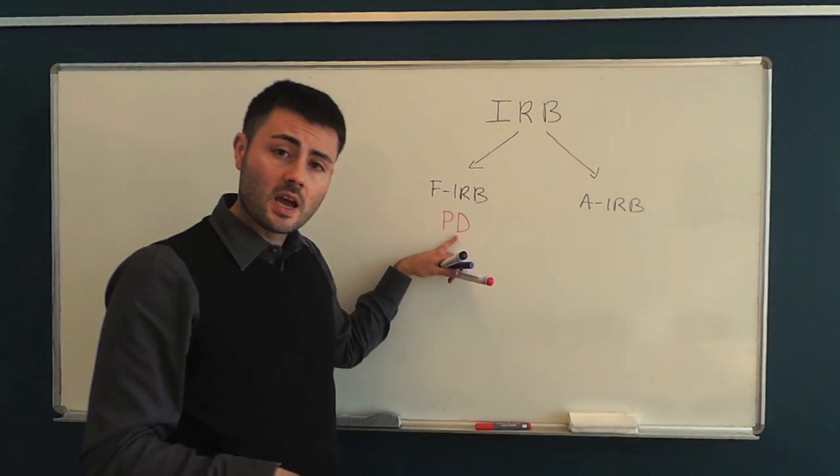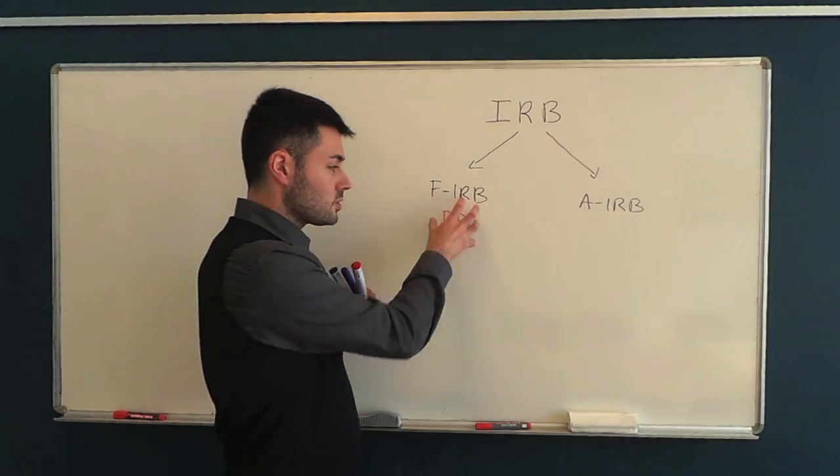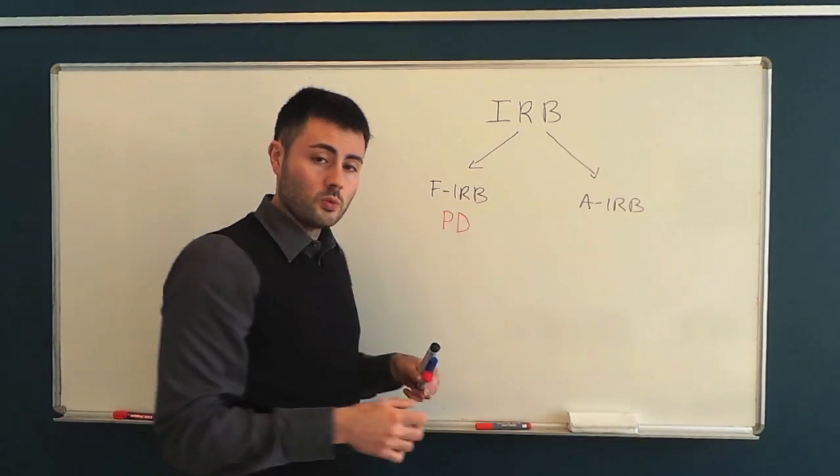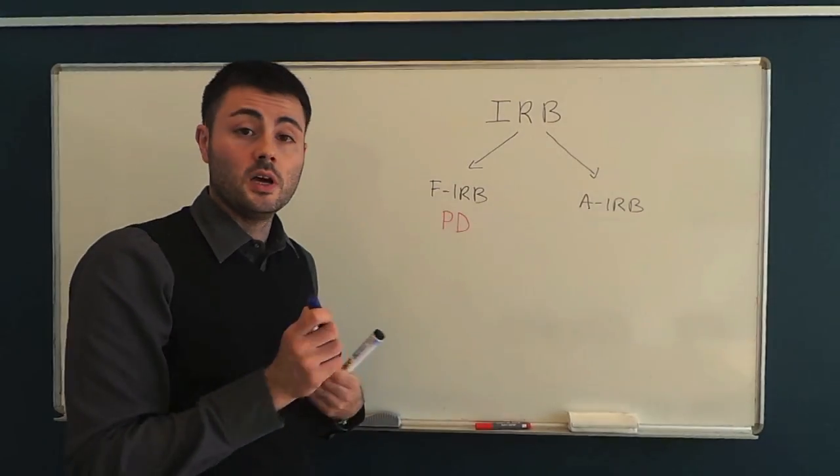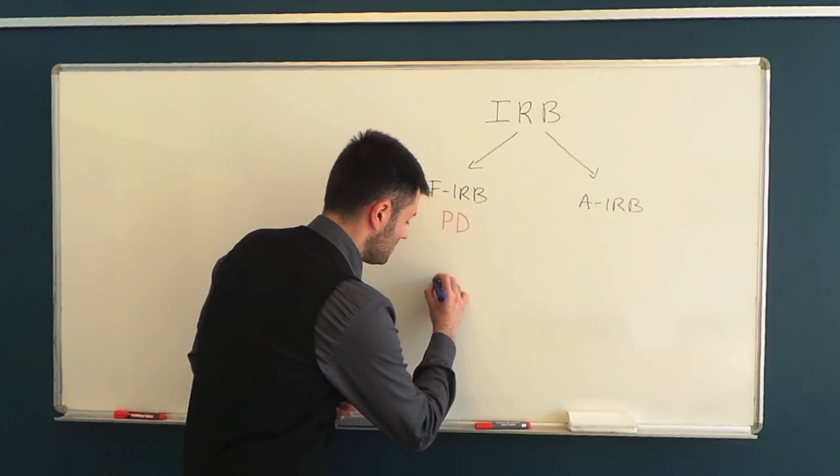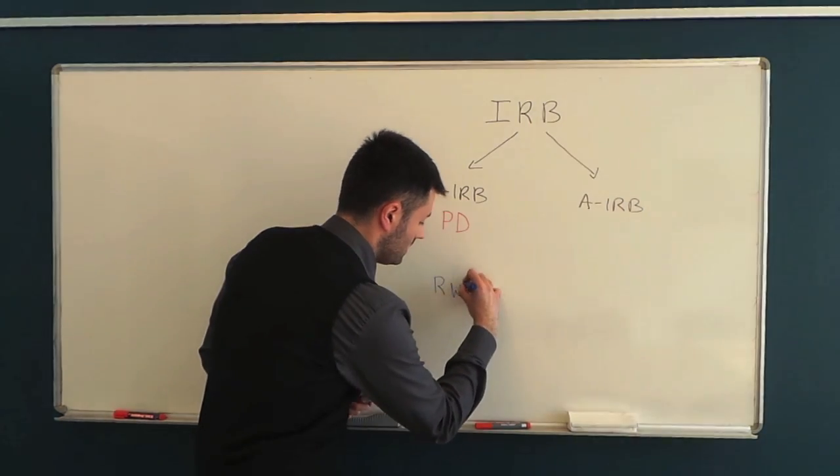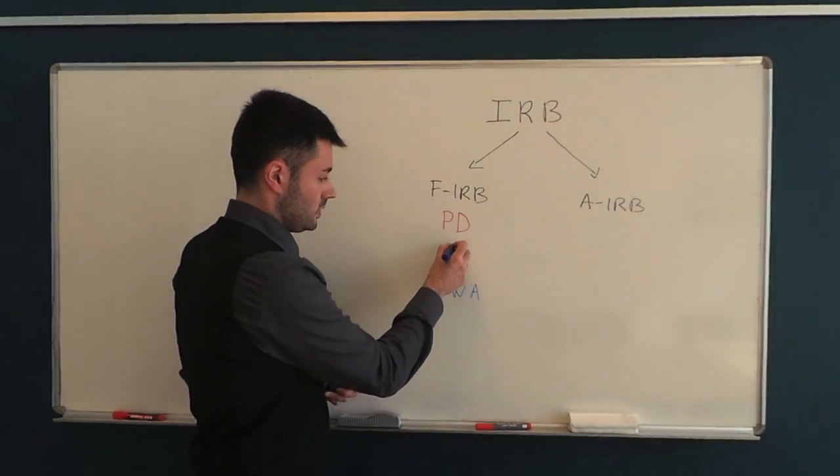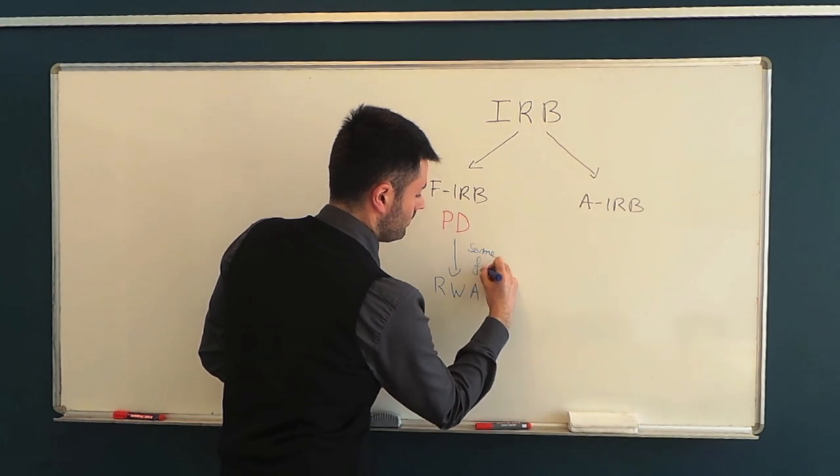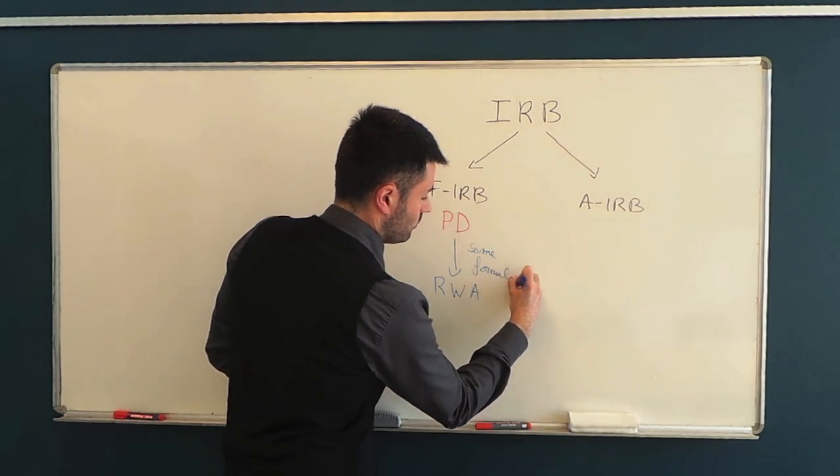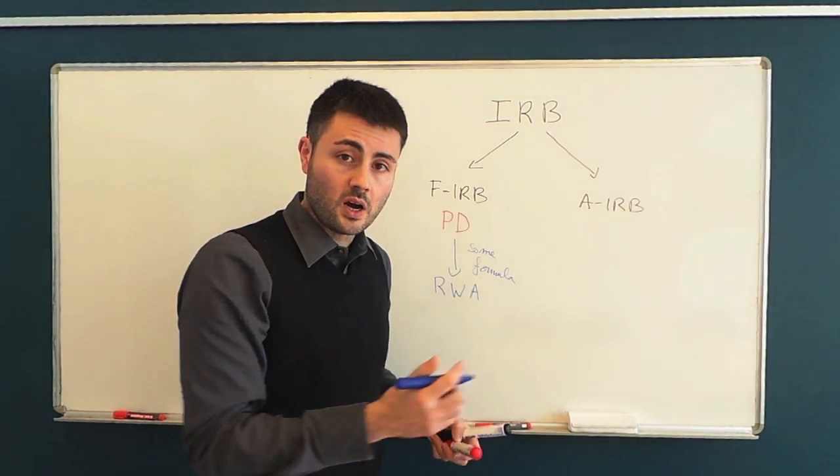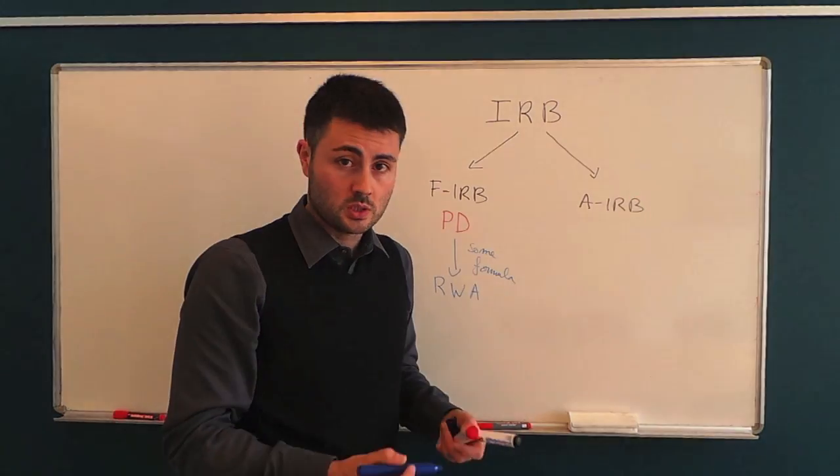Once they have this quantity, they plug in this quantity into some formulas and these formulas will give the usual quantity we are interested in at the end of the game. That is to say, risk weighted assets. OK? Here we have some formula. For the moment we cannot enter into much detail because we need to specify and to introduce new tools for that.